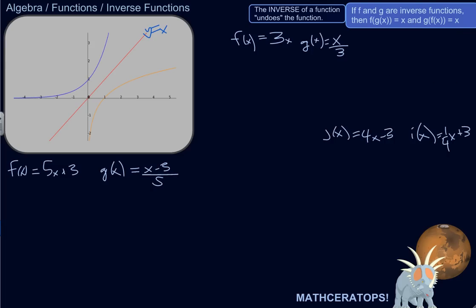So you can use this principle to determine algebraically whether two functions are actually inverses of each other. Here I've got f of x is 3x, and g of x is x divided by 3. That's saying, take a value of x, multiply it by 3. This one is saying, take a value of x, divide it by 3. Sounds like they probably undo each other.